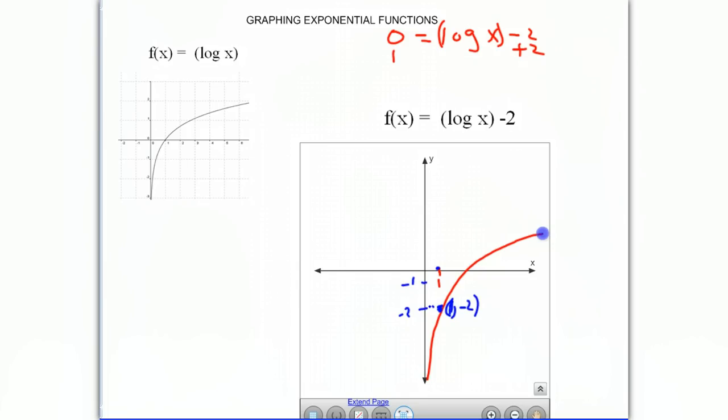If we add 2 to both sides, we get 2 is equal to the log of x. And we have learned that in order to solve this, we want to change it to an exponential function. So this means that 10 to the second power is equal to x, which means x is equal to 100, and that is going to be our x-intercept.